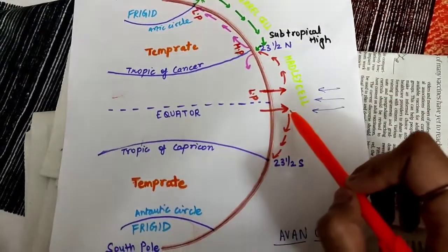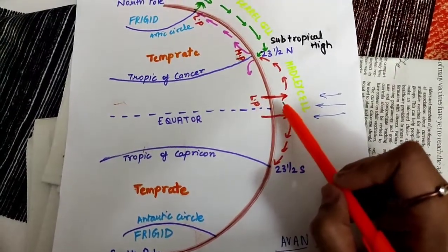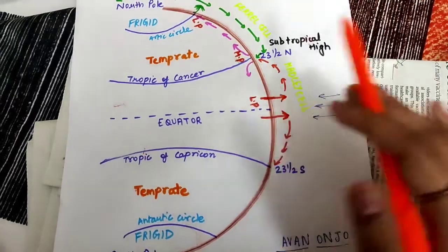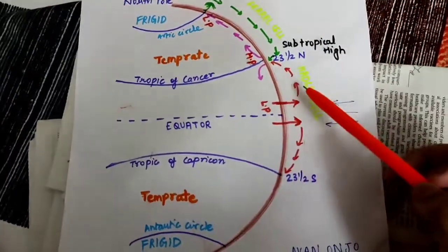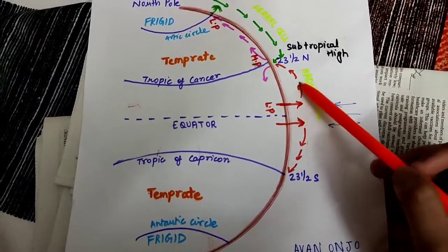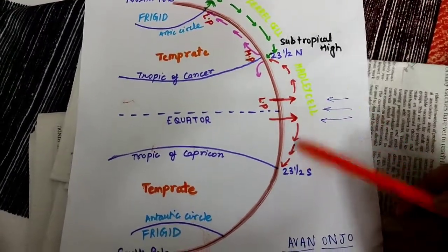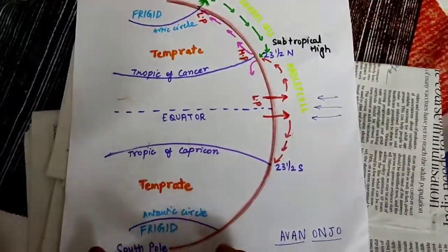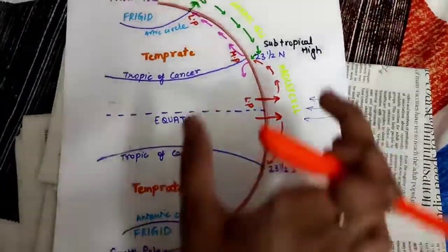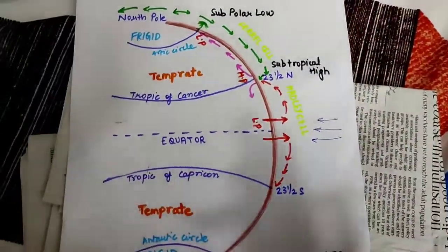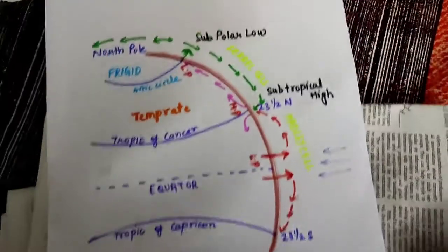Now if this warm air rises, it would rise till 10 to 15 kilometers, till the end of the troposphere. What would happen is that this wind would start to move in both directions. The similar thing is happening on the other side also, so I'll explain it only in one part.